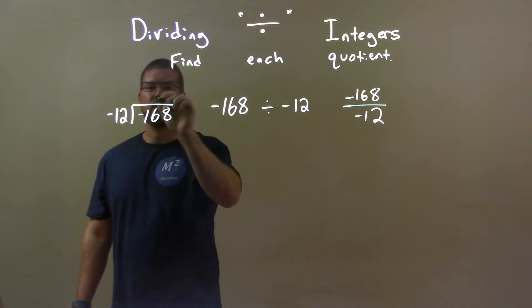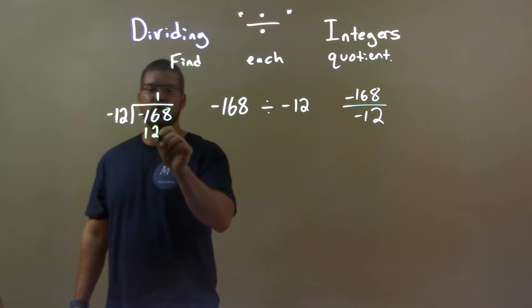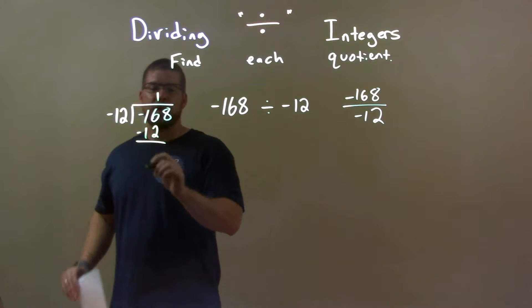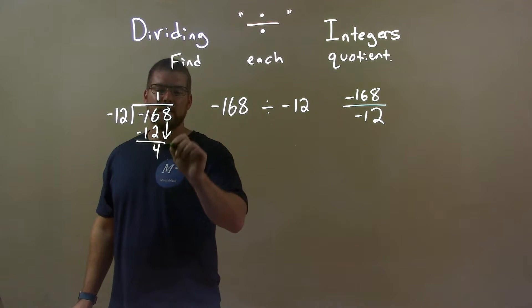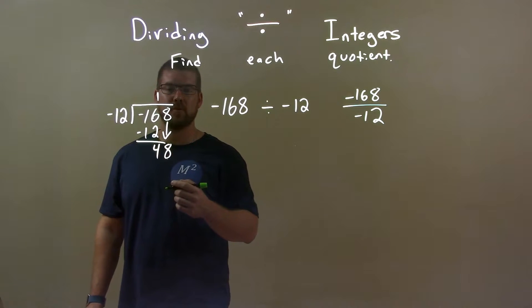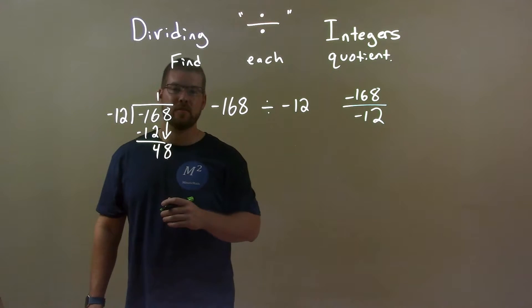12 goes into 16 one time, and 1 times 12 is 12. Subtract these. 16 minus 12 is 4, and I bring down the 8. Now we say, how many times does 12 go into 48, or what times 12 is 48?